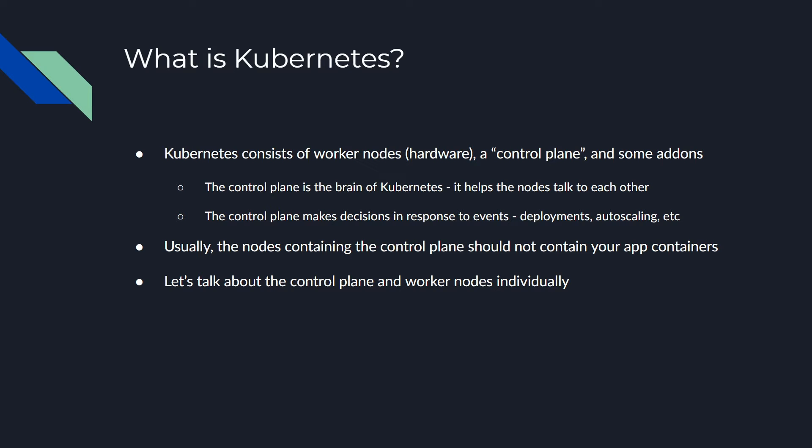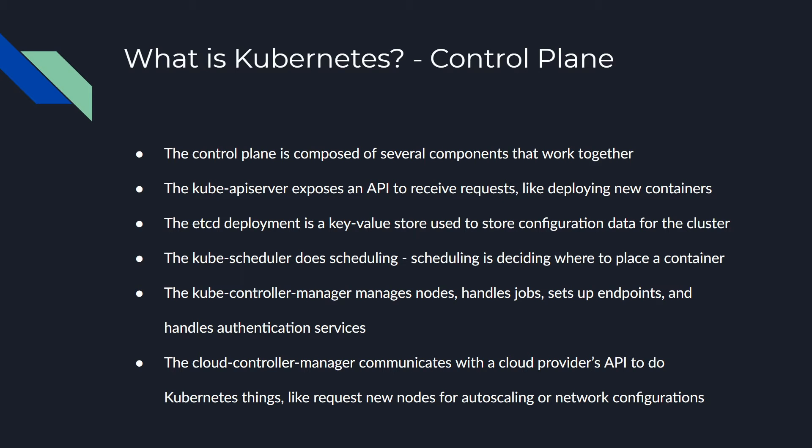Let's dive into the control plane and workers individually. Both are made of several components. What you'll work with most in a Kubernetes deployment is probably the Kube API server — basically a gateway API to allow a Kubernetes administrator to do stuff with the cluster, like deploy containers or define services. That's the entry point to doing things in the cluster.